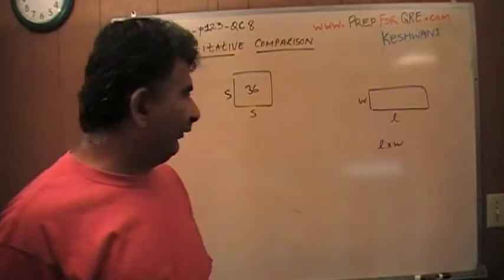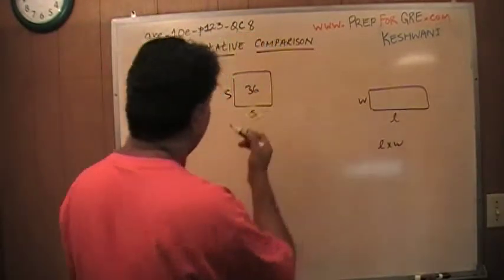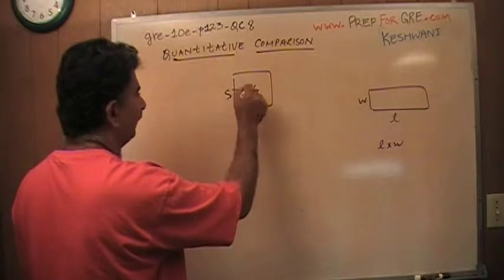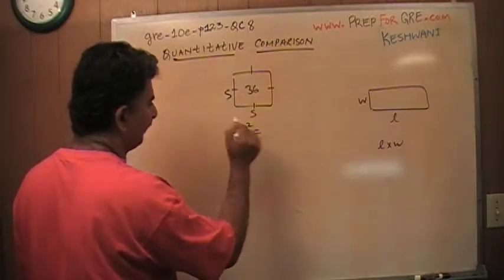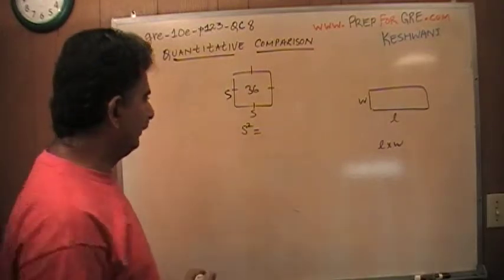instead of calling them length and width, in the case of a square, since all the sides have to be equal, they simply refer to a side. And the area simply is side squared, because S times S is S squared, and